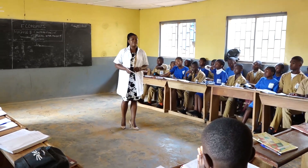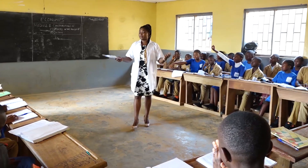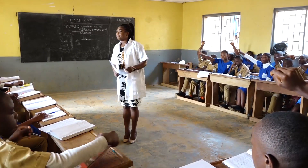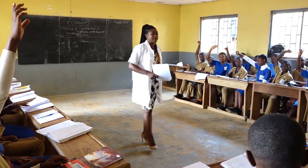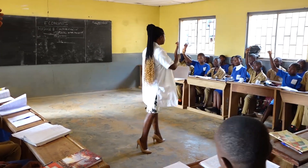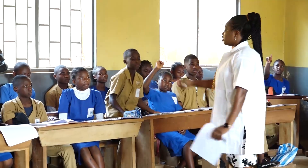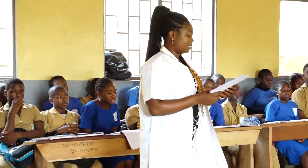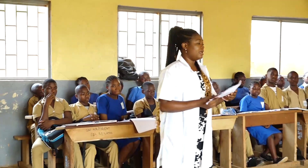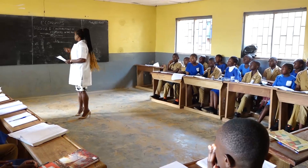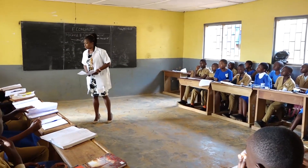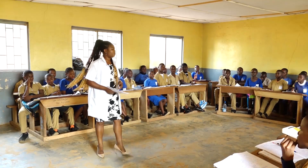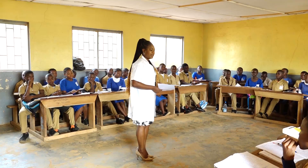We have four types of economic systems. Can we name them? Mixed economic systems, market economic systems, planned economic systems, and traditional economic systems. Today we're going to start with a new module — module two: contributions of resources in the process of production. Are we together?